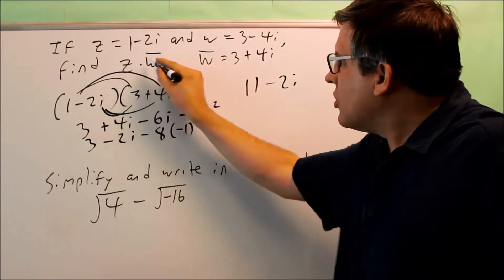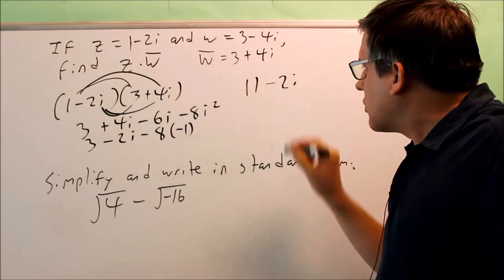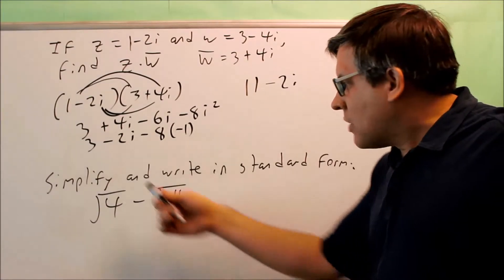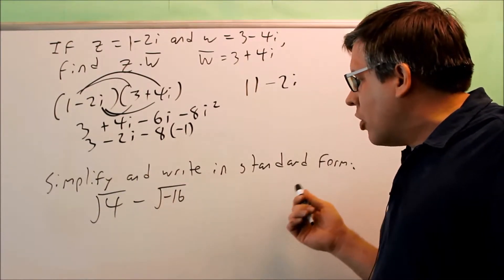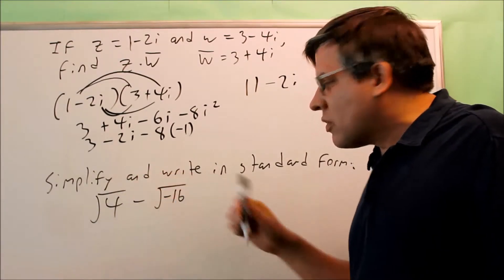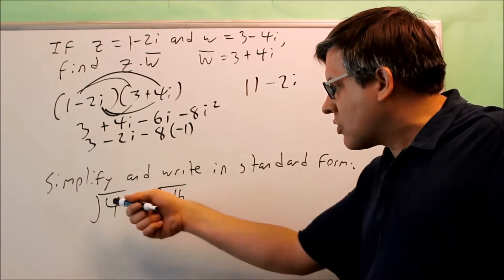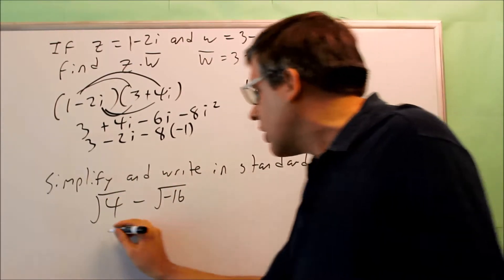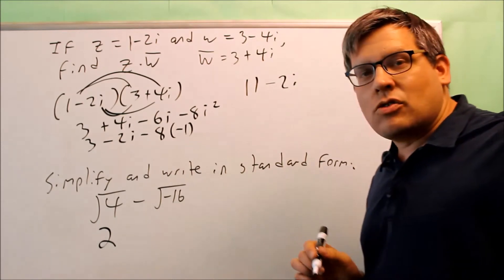So this would be z times w bar would be this, 11 minus 2i. Now let's do this one. Simplify and write in standard form. Okay, so I got some square roots that are going on here. And I know that the first one, the square root of 4, I can automatically just change that into a 2.